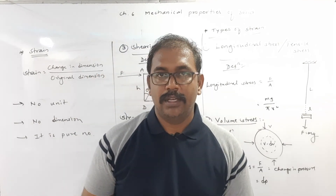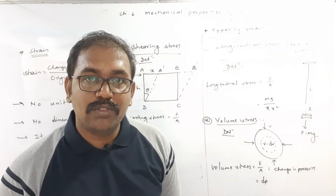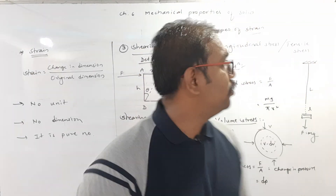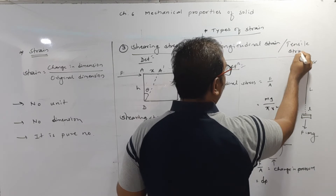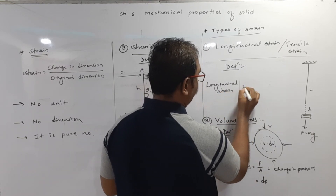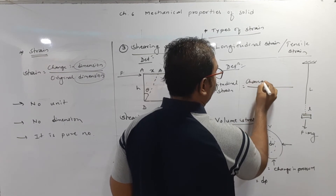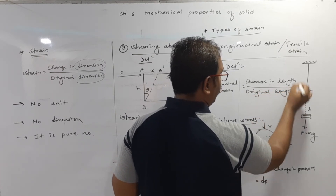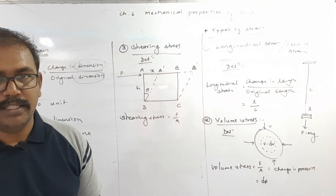The first type is longitudinal strain, which is related to change in length. Longitudinal strain equals change in length divided by original length. If the change in length is small l and the original length is capital L, then longitudinal strain equals l/L.